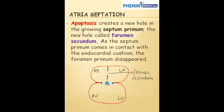Apoptosis creates a hole in the septum primum as it's growing towards the endocardial cushion. This hole is the second foramen we call the foramen secundum. As development continues, the septum primum grows towards the endocardial cushion, thereby closing the foramen primum, leaving us with the foramen secundum.